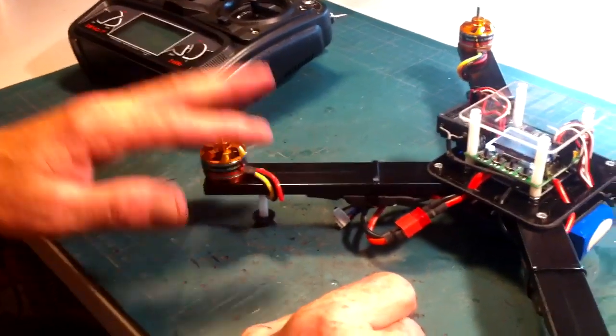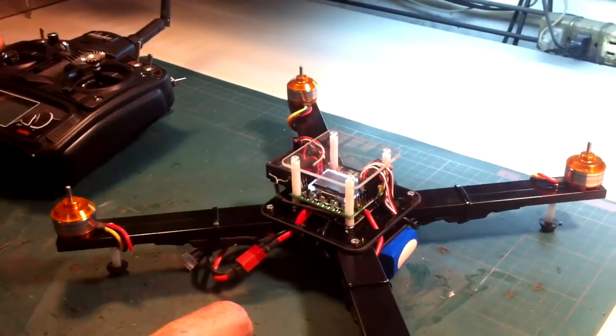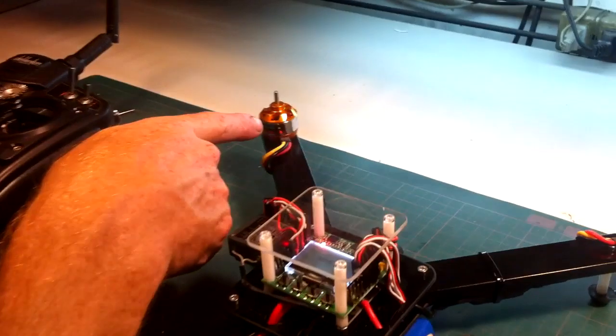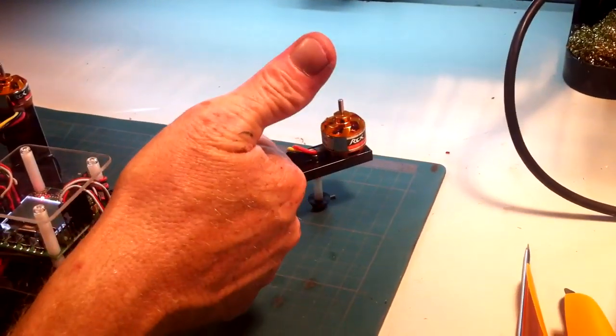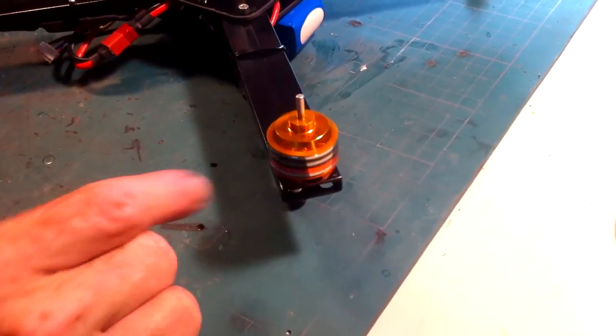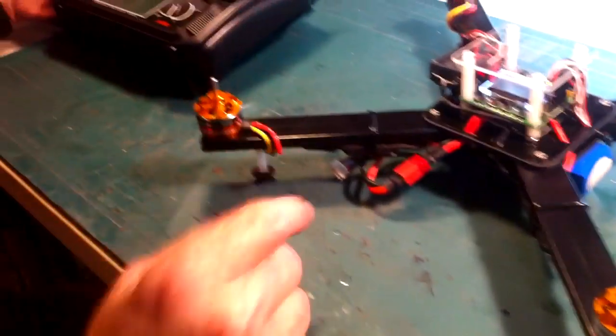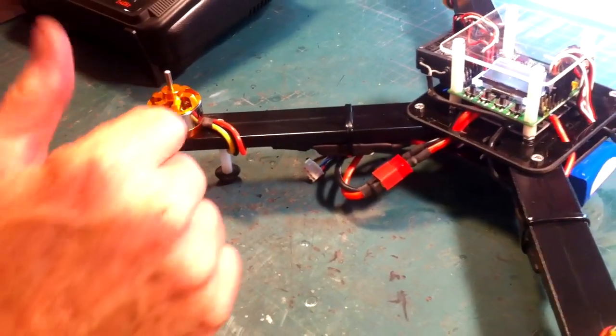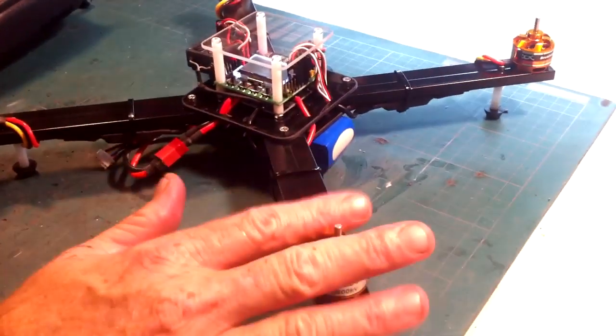Now let's check to see. This is clockwise, it's good. Counterclockwise, it's good. So far I'm lucky on two motors. Now this should be clockwise. Oops, it's spinning counterclockwise. Let's check number four, counterclockwise, it's good.